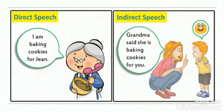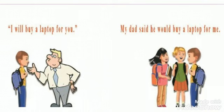Let us see one more example for direct speech and indirect speech. Direct speech: 'I am baking cookies for Jean.' In indirect speech, grandma said she is baking cookies for you. Next example: 'I will buy a laptop for you.' My dad said he would buy a laptop for me. So 'I will buy a laptop for you' is direct speech — that's why it is put into inverted commas. 'My dad said he would buy a laptop for me' is indirect speech.